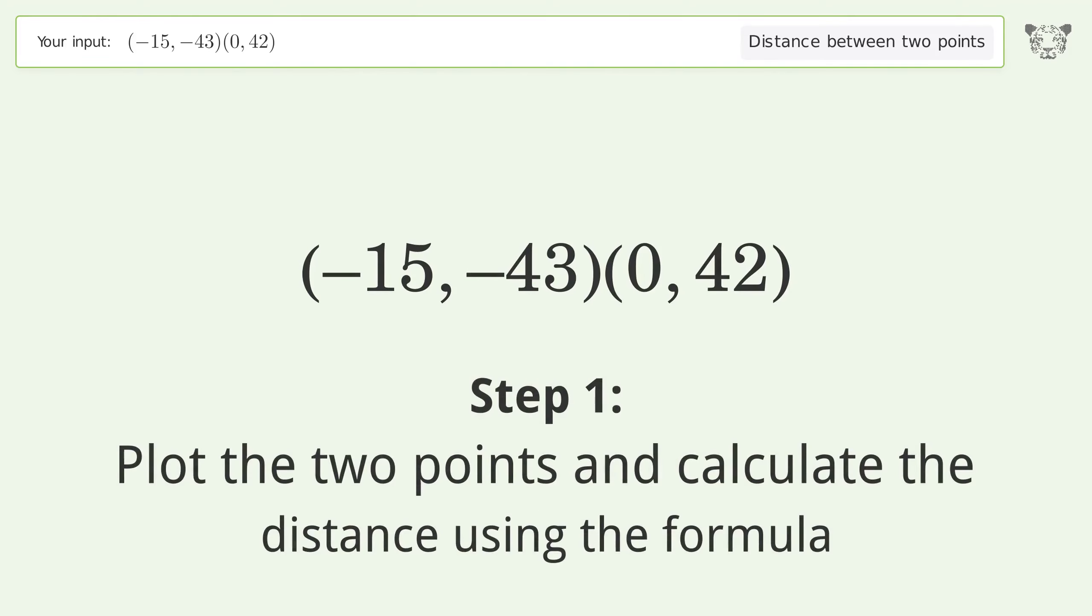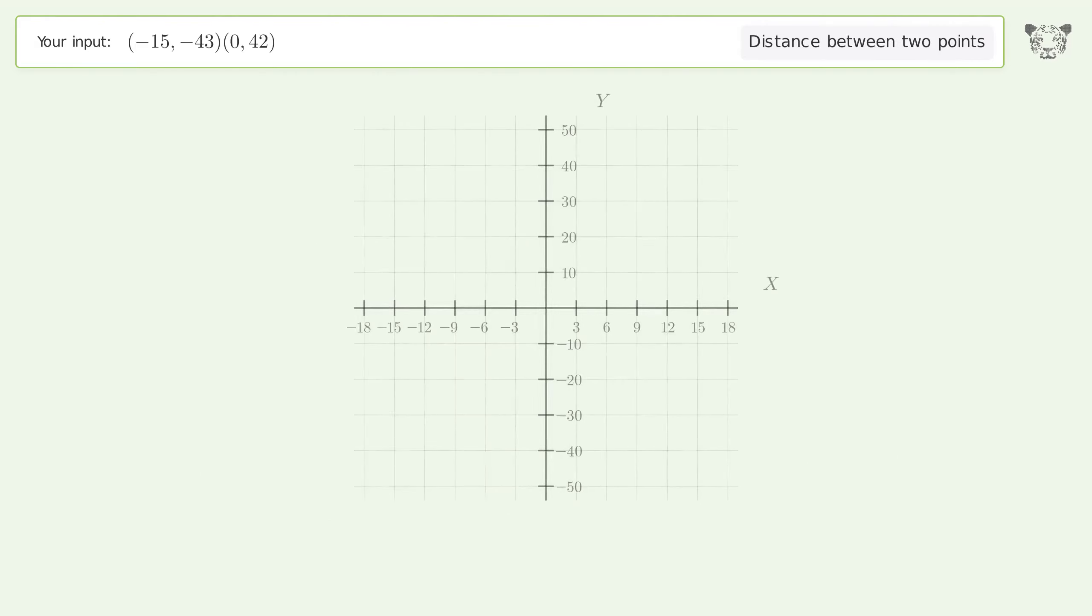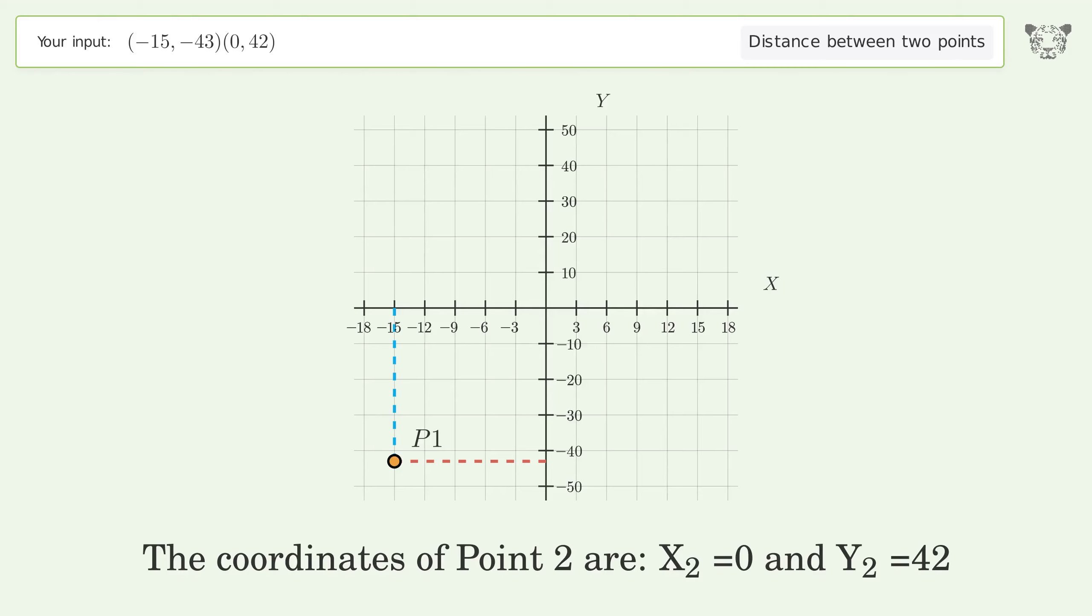Plot the two points and calculate the distance using the formula. The coordinates of point 1 are x1 equals negative 15 and y1 equals negative 43. The coordinates of point 2 are x2 equals 0 and y2 equals 42.